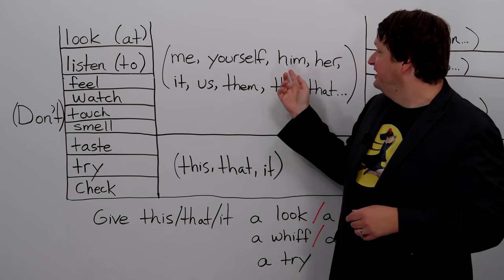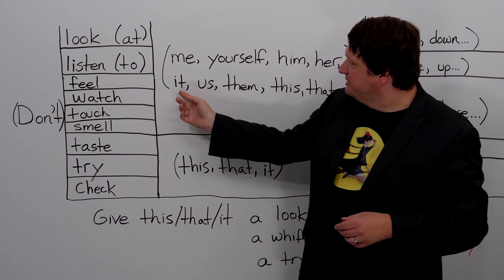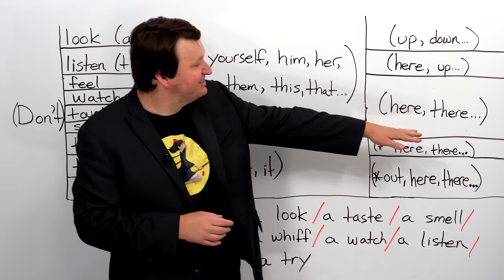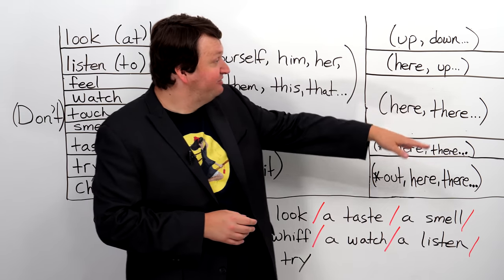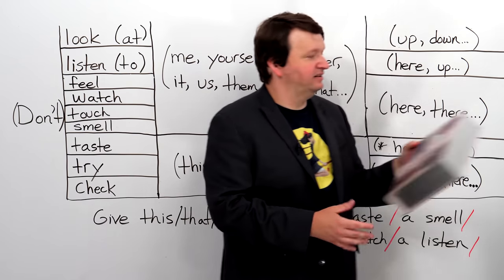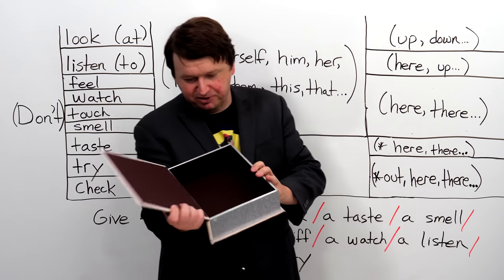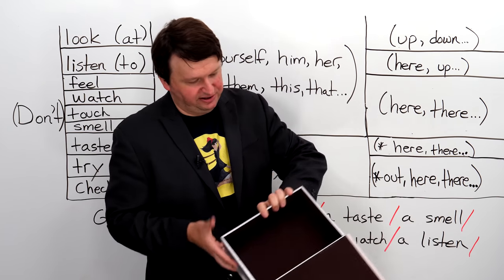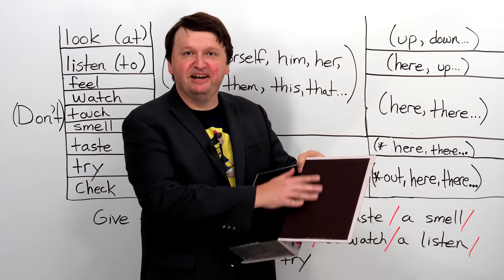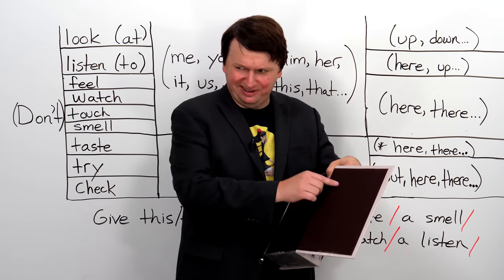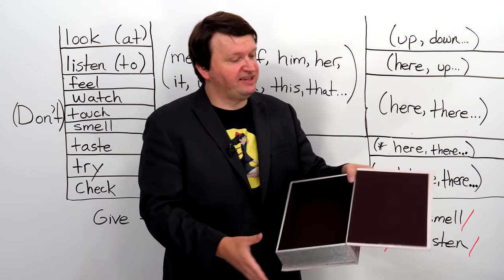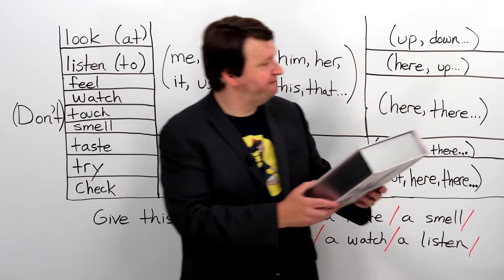Next we have touch. Touch refers to physical contact — I'm touching the board. Touch him, touch her, touch it, touch them, touch this, touch that, touch here, touch there. For example, with something that has an interesting texture, you might say touch here — this feels cool — or touch this, touch that — it has a rough feeling to it.